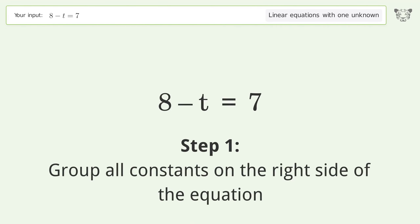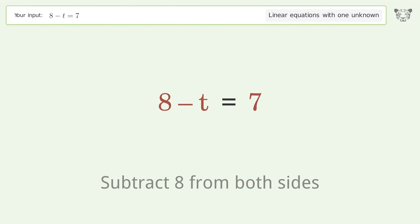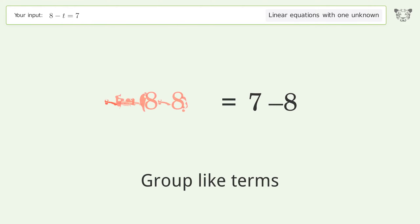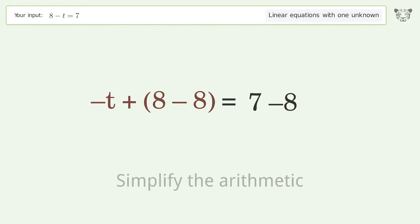Group all constants on the right side of the equation. Subtract h from both sides. Group like terms. Simplify the arithmetic.